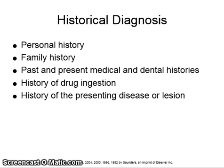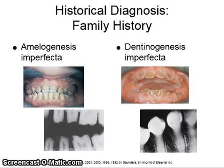Historical diagnoses are obtained by getting a personal history, a family history, past and present medical and dental histories, history of drug ingestion or drug use, and the history and duration of the presenting disease or lesion. Family histories can pinpoint the diagnosis of amelogenesis imperfecta, which is improper maturation and formation of the enamel, or dentinogenesis imperfecta, which is the improper maturation and formation of dentin.